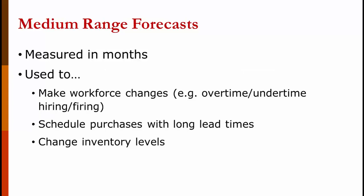Medium range forecasts go out for a couple of months. We didn't do these at Georgia Power Company. These are used to make changes in the workforce when that can't be done quickly. They're used to schedule purchases that have longer lead times, and they're used to make significant changes in your inventory level. Small changes can be made in the short range.